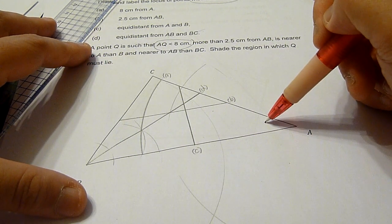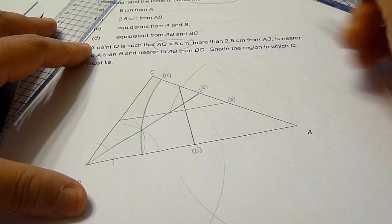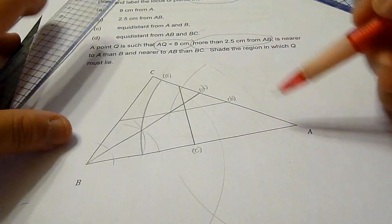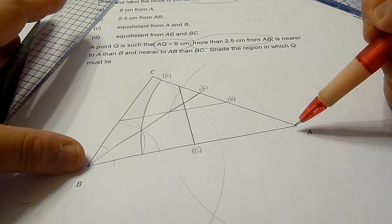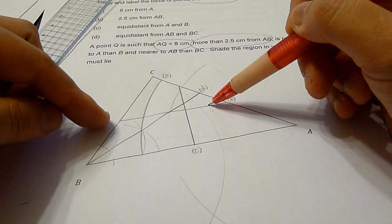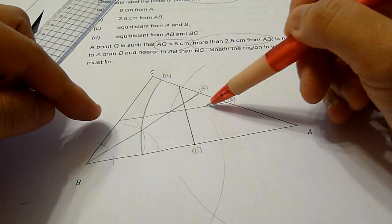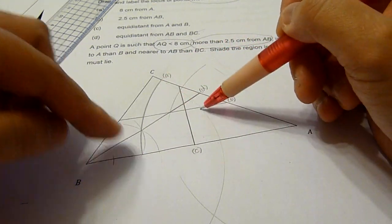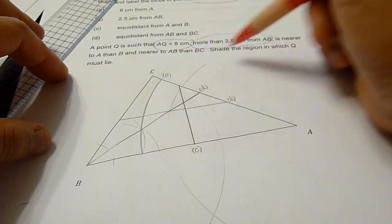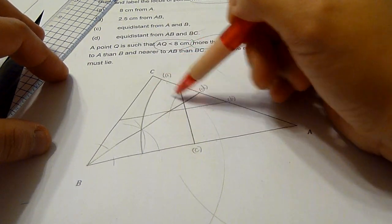And next thing, it should be more than 2.5 cm from AB. AB is here. So if it's more than 2.5 cm, it will be above this parallel line to AB. So up to these conditions, we have this region.